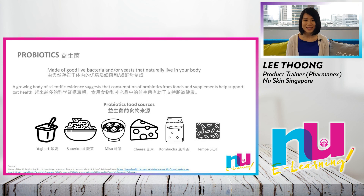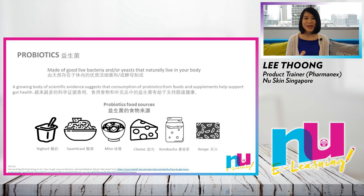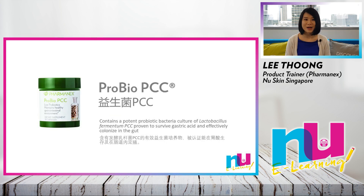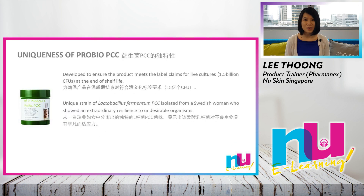Fermented food sources include yogurt, sauerkraut, miso, cheese, kombucha, and tempeh. It is also becoming more common that many of us are taking probiotic supplements. Today we are going to learn about Probio PCC, our Pharma Next probiotic supplement, which contains a potent probiotic bacterial culture of Lactobacillus fermentum PCC, proven to survive gastric acid and effectively colonize in the gut.